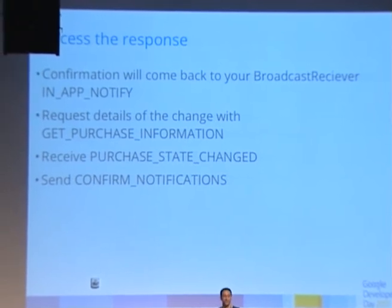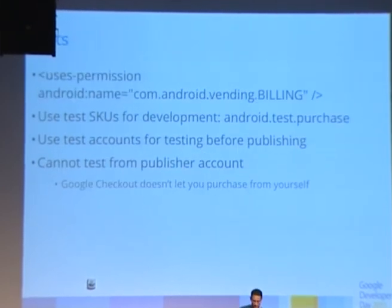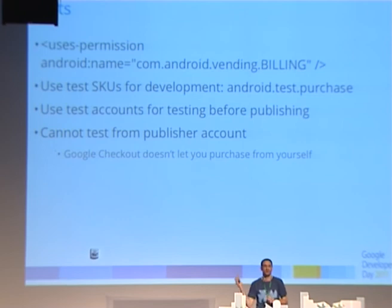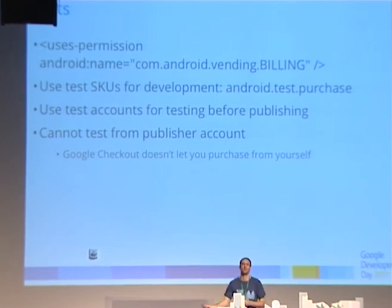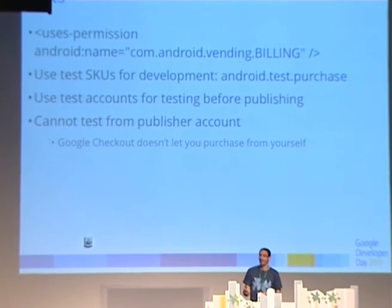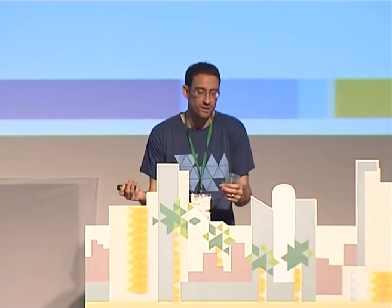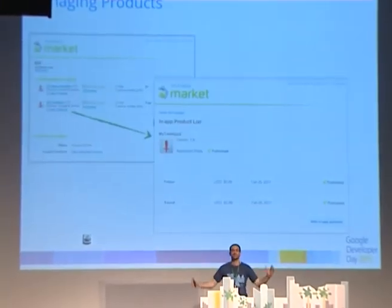Confirm the change — once you've received the notification, you send a confirmation message out again, or we'll keep sending the purchase notifications. You need to use the billing permission — users know you're going to have in-app billing. We have some test units; if you use the android.test.purchased unit, it means whilst you're developing you don't keep needing to go to Google Checkout and cancelling every single order. Like paid applications, you can't purchase from your own account — Google Checkout doesn't let users buy things from themselves, so use a different Gmail account for testing. You manage your products in the Android Market screens under in-app products. We also added CSV import and export to those if you want to manage a lot of products at one time.